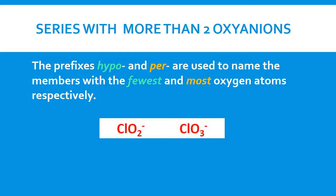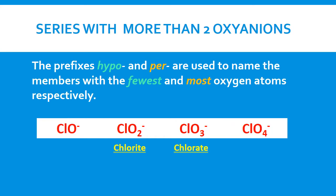We have ClO2⁻ and ClO3⁻. We start naming as if there are two in a series. The one with fewer oxygen atoms we call chlorite, and the one with more oxygen atoms we call chlorate. Now if we add two more to the series — one with fewer oxygen atoms than chlorite — since it has the fewest oxygen atoms in the series, we put the prefix hypo in front of chlorite, giving us hypochlorite. The one with one more oxygen atom than chlorate has the most, so we put the prefix per in front, and call it perchlorate.